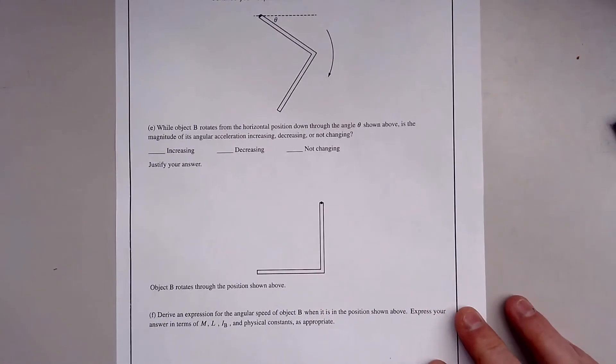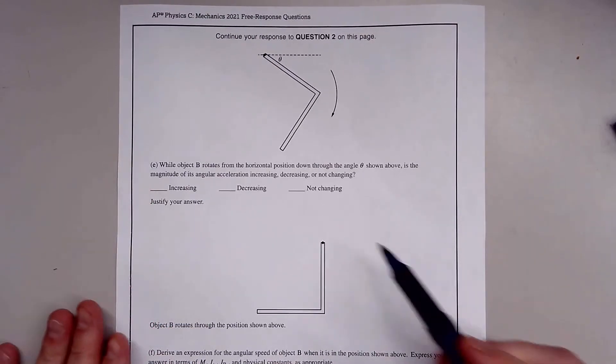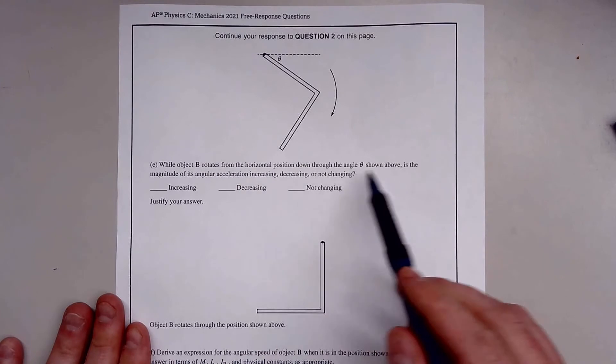Now derive an expression for the angular speed of object B when it is in the position shown. We know it was up here. The actual center of mass of this object is right here, 3/4 L from the top. We look at it like this: this object has potential energy, and all that's going to go to kinetic rotational energy because we're asking for angular speed.